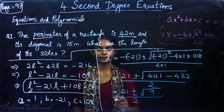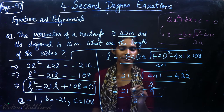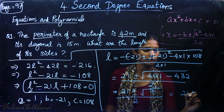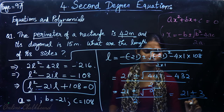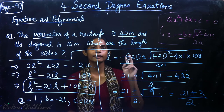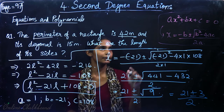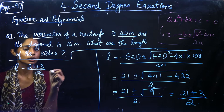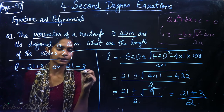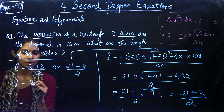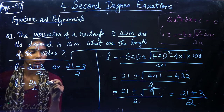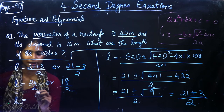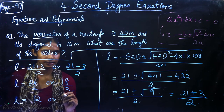L has two possible values. So 21 plus or minus root 9 is plus or minus 3, divided by 2. We have L equal to 21 plus 3 by 2, or 21 minus 3 by 2. That is L can be 24 by 2 or 18 by 2, which gives 12 and 9.